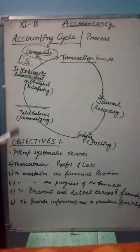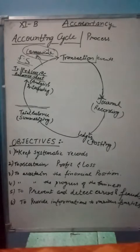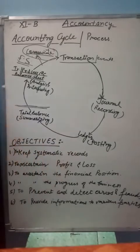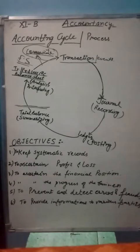The next topic is objectives of accounting. What is the purpose of making accounting? First, we have to keep systematic records. The main objective of accounting is to keep complete records of business transactions according to specified rules.